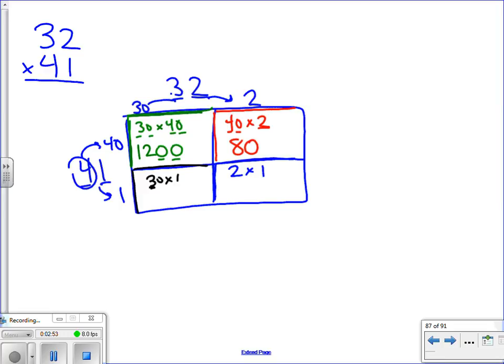Again, down here, 3 times 1 is 3. I have a zero in the one's place, so I'm going to have a zero in 30. And of course, 2 times 1 is 2.